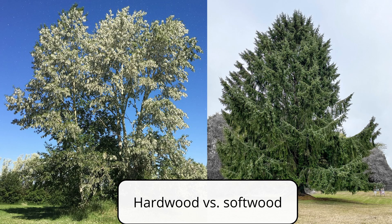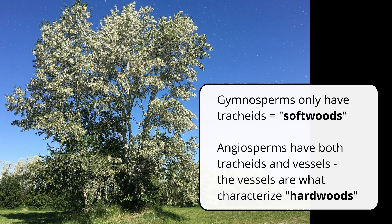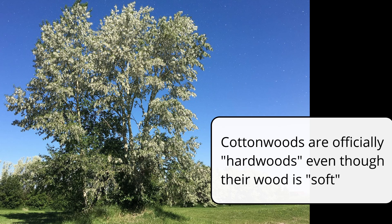These cell types are actually what distinguishes a hardwood versus a softwood. Gymnosperms only have tracheids, whereas angiosperms can have tracheids and vessels. It's the vessels that determine whether a tree is considered a hardwood or a softwood. This is a very specific definition. It's different from what you might use casually. A lot of people will say a cottonwood has softwood because the wood is literally softer than something like an oak, but that's not botanically correct because only gymnosperms like conifers are officially considered softwoods.